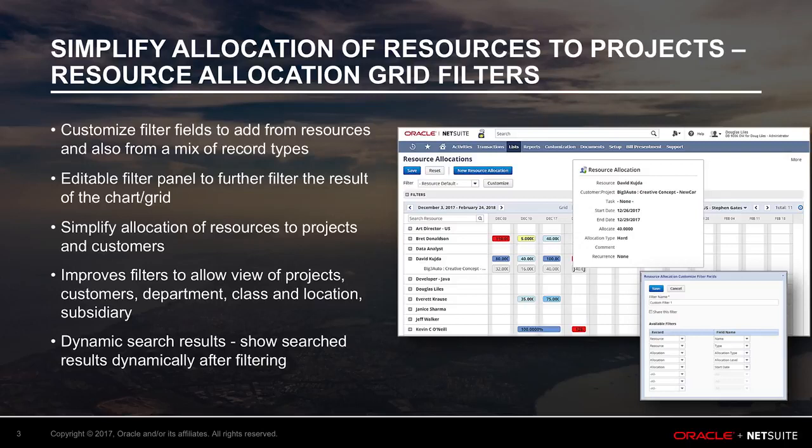department, class and location, billing class, vendor type, vendor category, and type — like employee, vendor, and generic resources. Allocation filters include project, client, allocation type, start date, project task, and allocation level.